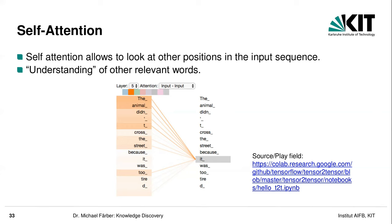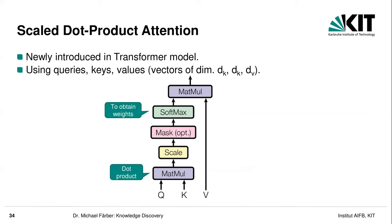How is self-attention realized technically? This is the first great idea: scaled dot product attention. You have so-called queries, keys, and values — starting with Q, K, and V — of dimensions d_k, d_k, and d_v. You merge the query and the key with matrix multiplication, apply some scaling, and masking — which is especially relevant for the decoder to ensure it only uses information already known, not what comes in the future. Then with the softmax you get weights between 0 and 1 that sum to 1 — so a probability — which you then multiply with V to get the attention output.